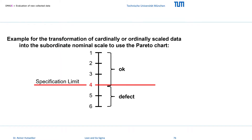We collected data for four weeks after improvement. First I transformed the new rating data again. Values above and equal to the specification limit 4 are assigned to the category OK, and values below the rating 4 to the category defect.